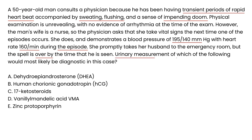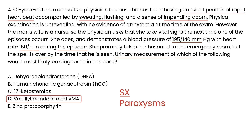The question asks: urinary measurement of which of the following would be most diagnostic? This man definitely has symptoms that are episodic, occurring in paroxysms — they come and go. The urinary measurement of the breakdown products of epinephrine and norepinephrine, which is VMA, would be most diagnostic. These are the catecholamine breakdown products.